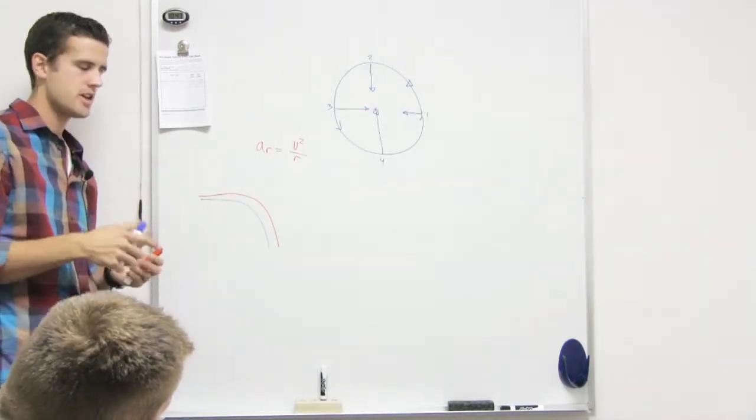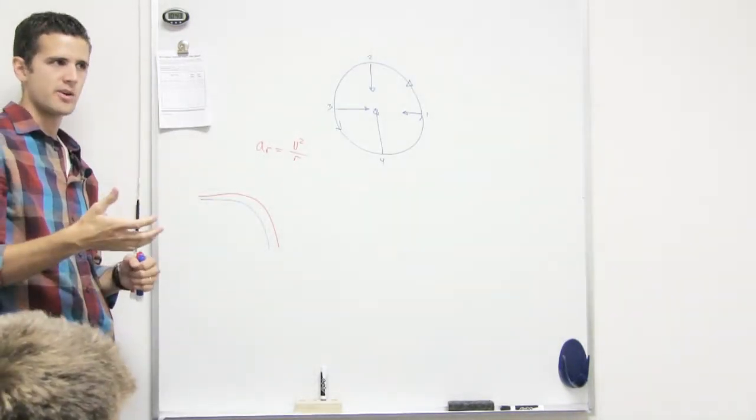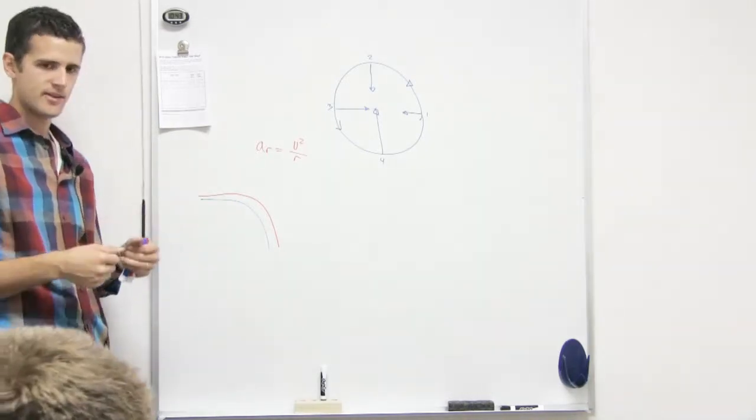So that's that radial acceleration. As you come around that corner at five miles an hour, you don't have a lot of radial acceleration. You're not being yanked around very much.